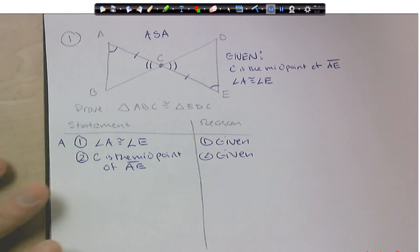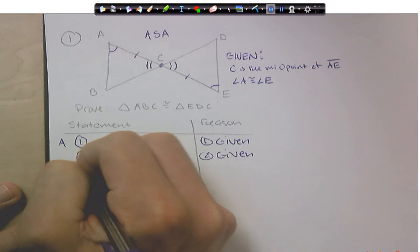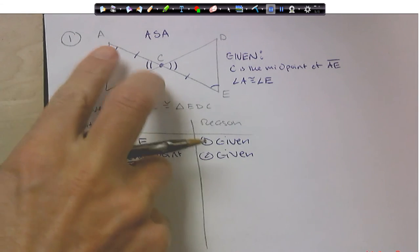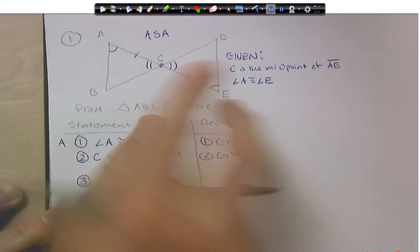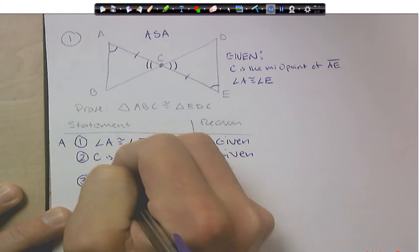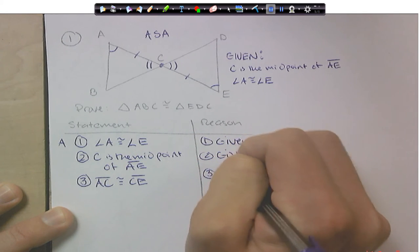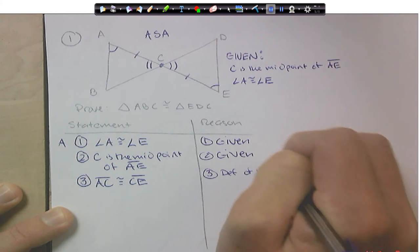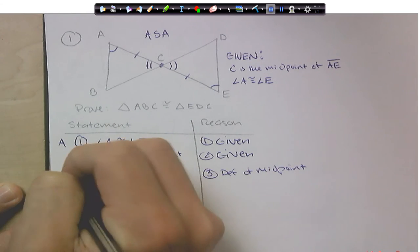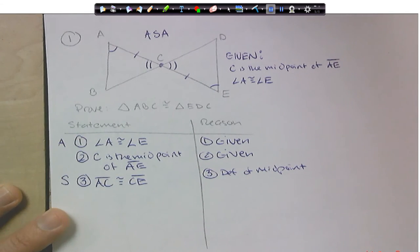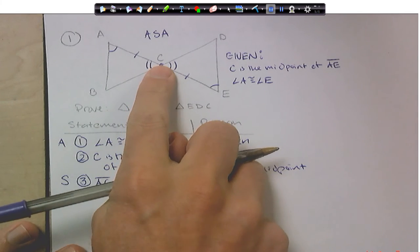Now, that didn't prove anything, so I can't write a letter next to it. But what that does help us prove is the next statement that AC and CE are congruent. And that's the definition of a midpoint. And there I proved the side. And last but not least, I've got to prove the last angle, and that's going to be this angle C.